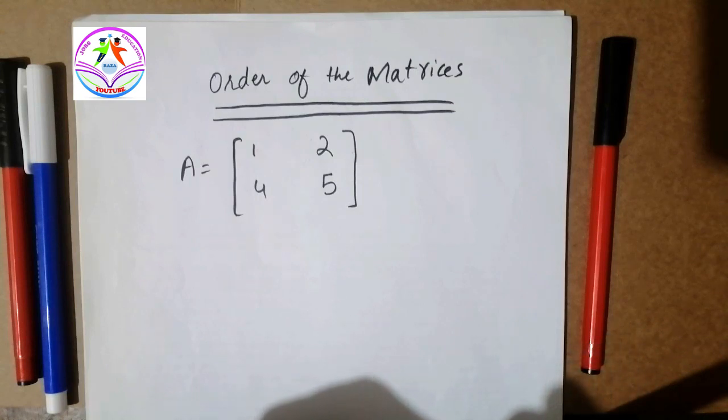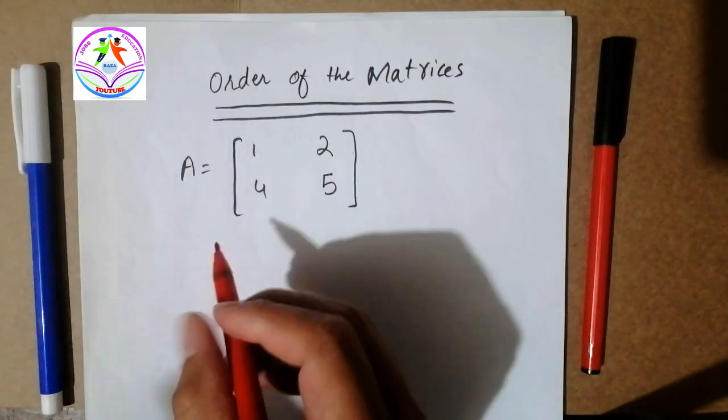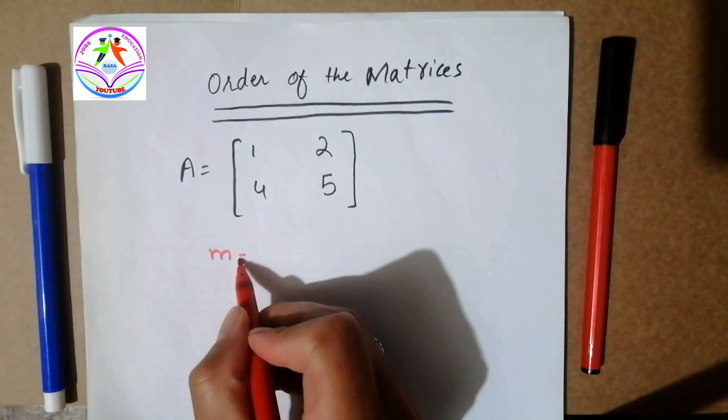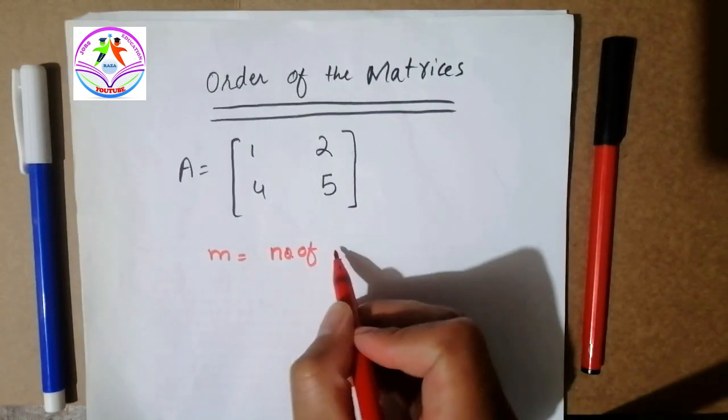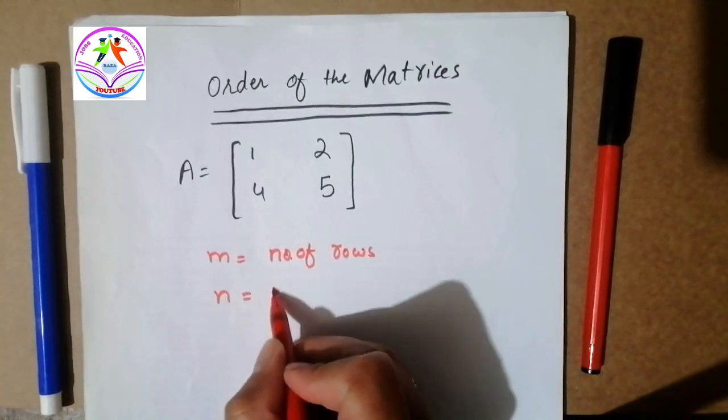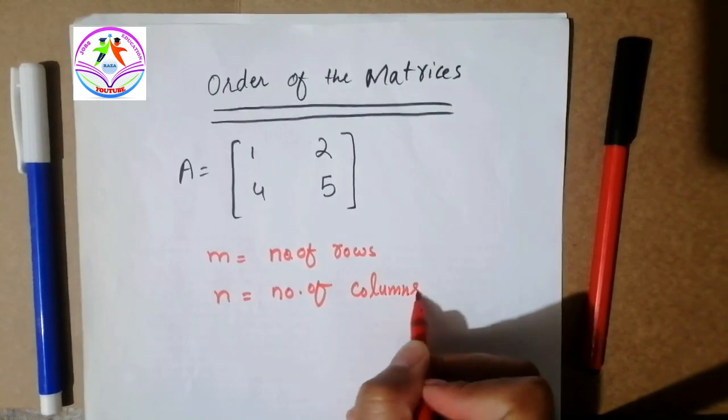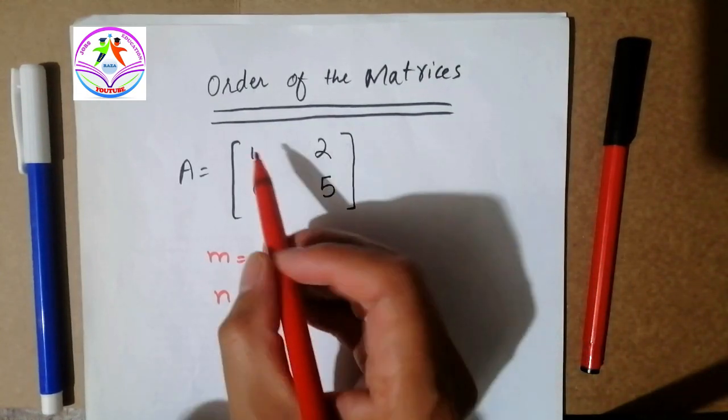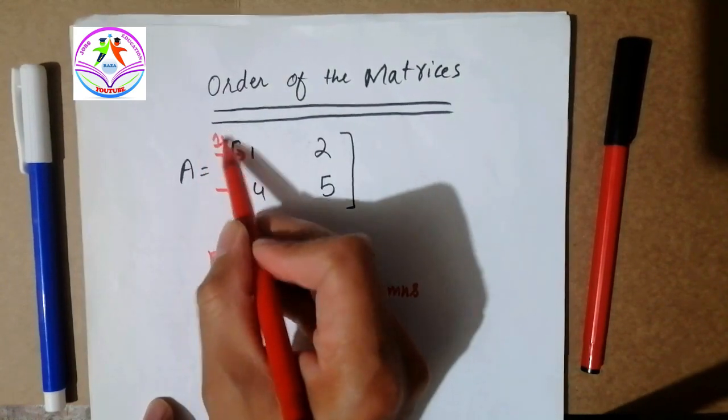So if I write this, for example, m is equal to number of rows and n is equal to number of columns. Here you can see two rows, it's a first row and the second row, and two columns, first column and second column.